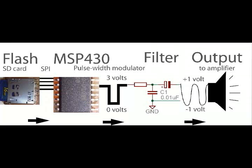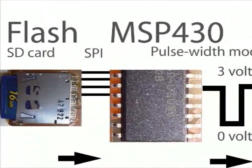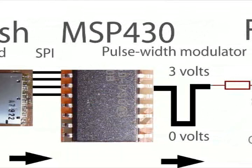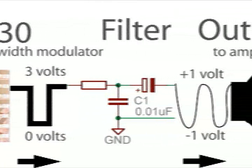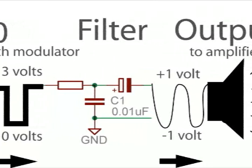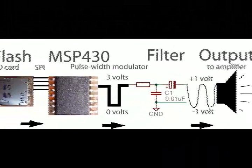This time we're taking the next step and reading an audio file from a secure digital memory card. The MSP430 reads a raw audio file from the SD card and writes the value to the pulse width modulator, where it's converted to an average voltage between 0 and 3 volts. Next, the signal is cleaned and the DC current removed by a simple filter circuit. The output is now ready to drive an amplifier like a set of powered PC speakers.